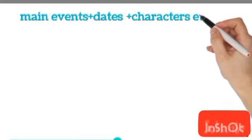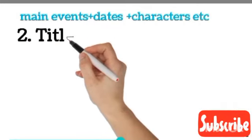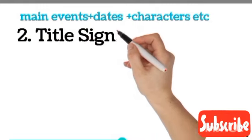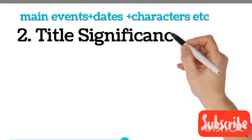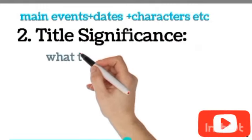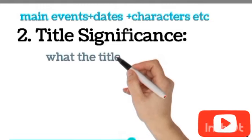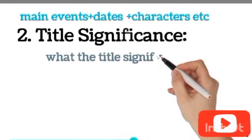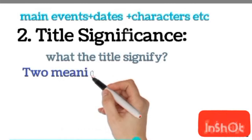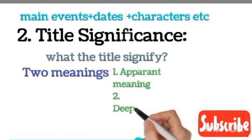This is an important point to critically evaluate any poem. Second step is you must know about the title significance of the poem. You need to know what the poem's title is signifying. The poem's title is based on two meanings: apparent meaning and deeper meaning.